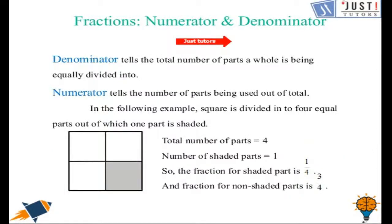Now let's learn more about numerator and denominator. Denominator tells the total number of parts a whole is being equally divided into. As we can have a look at this shape, this shape is divided into 4 equal parts which means the denominator will be 4. And numerator tells the number of parts being used out of total.